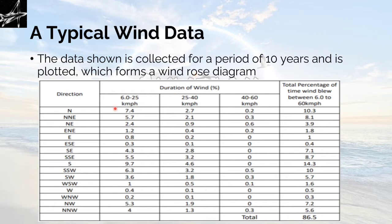In the picture below, we have the directions as North, North-North-East, North-East, and so on. These are 16 directions which we could find on a compass. Then we have the second column divided into three columns: duration of wind, divided as kilometers per hour from 6 to 25, 25 to 40, 40 to 60. This is the total percentage of time wind blew between 6 to 60 km per hour. Summation of this row is 10.3, summation of this row is 8.1. So it is 86.5 total percent of the time wind blew between 6 to 60 km per hour.